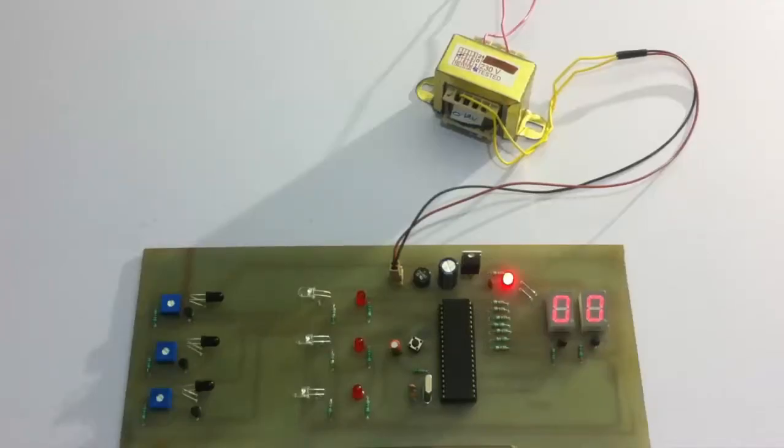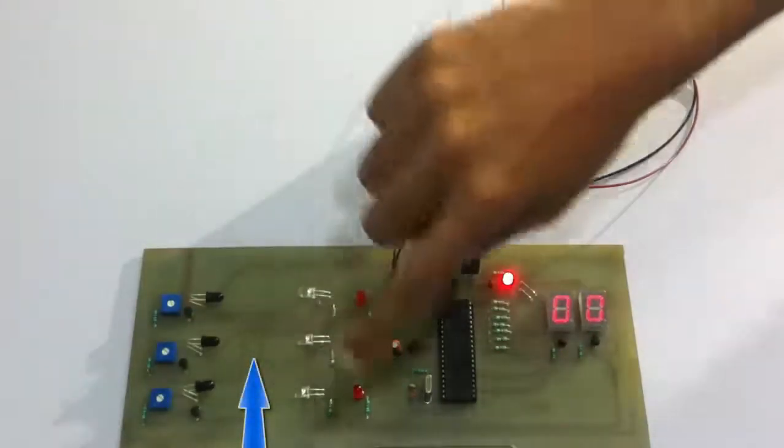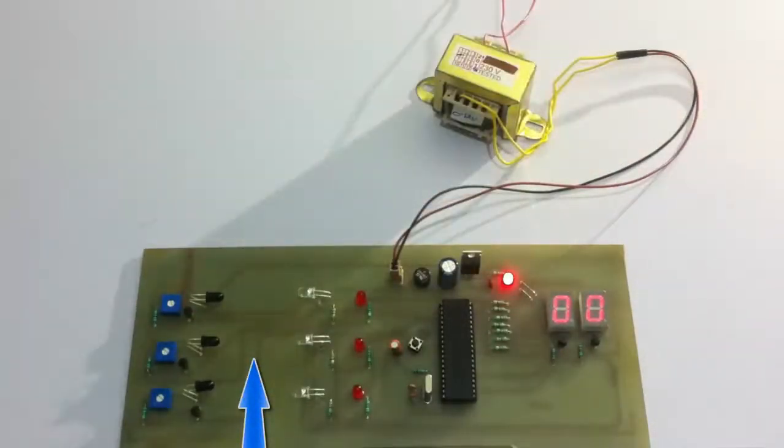Hi, this is a demonstration of an automatic object counter for industry project. This is an efficient system that helps users count objects automatically. It's usually used for counting the number of products moving on a conveyor belt. As soon as an object passes through here, it increments the count of objects and keeps incrementing.